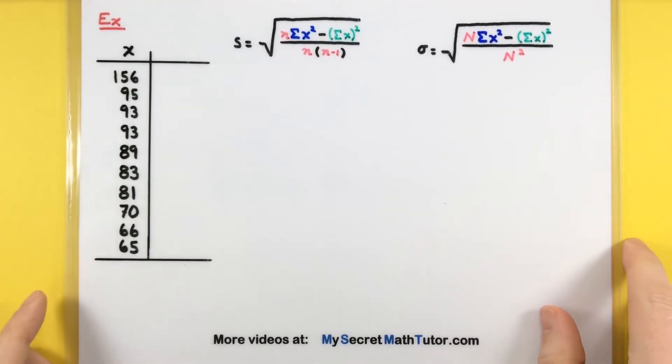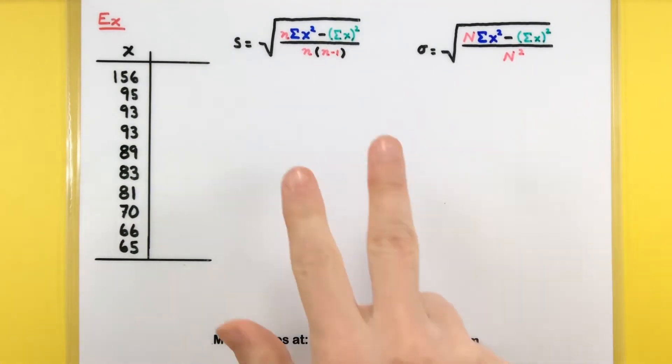Remember, depending on whether our data comes from a sample or a population, there are two different formulas. The calculator will do both formulas, but you have to know whether your data is from a sample or a population.